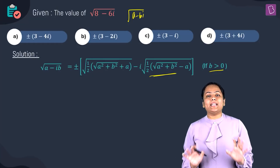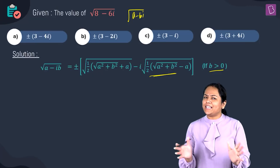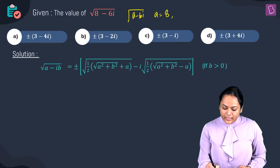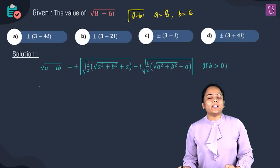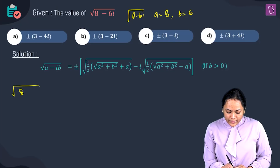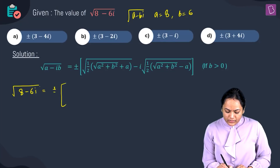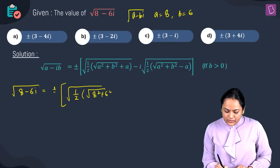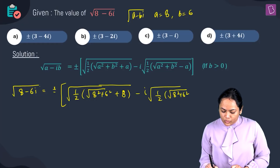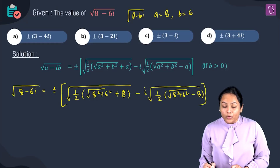We are going to directly apply this formula by substituting the values of a and b. Here a equals 8 and b equals 6, so substituting: root of (8 - 6i) equals plus or minus square root of half times root of (8² + 6² + 8), and the second term becomes minus i times root of half times root of (8² + 6² - 8).